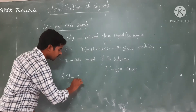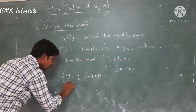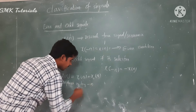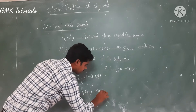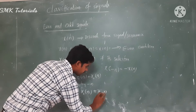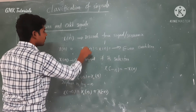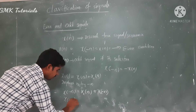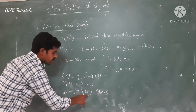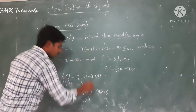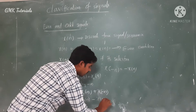Generally x of n can be represented as the sum of even and odd components: x of n equals x_e of n plus x_o of n. Now replace n by minus n: x of minus n equals x_e of minus n plus x_o of minus n. Based on the even and odd properties, x_e of minus n equals x_e of n, because that is the even signal condition.